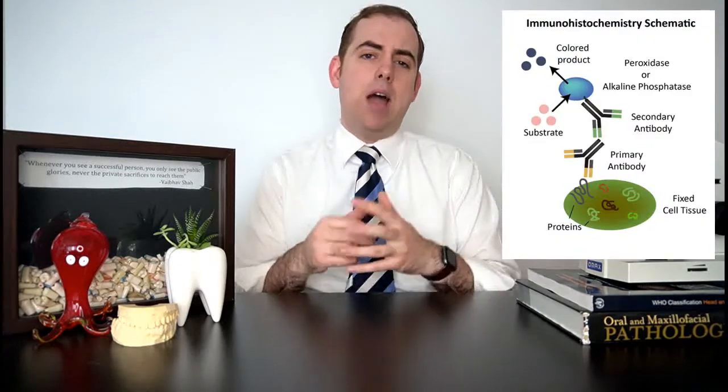A different type of staining technique is immunohistochemistry. We use immunohistochemistry when we're not certain what type of cell we're looking at. Different cells have different structures — they may have different genes in the nucleus, different proteins in the cytoplasm, or different surface markers on the cell membrane. Immunohistochemistry, or IHC, is a targeted approach to help us identify what type of cell we're looking at.